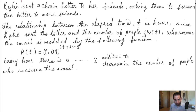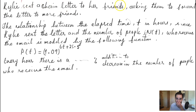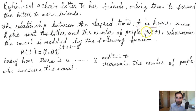Welcome back. In this example from Khan Academy, Kylie sent a chain letter to her friends asking them to forward the letter to more friends. The relationship between elapsed time t in hours since Kylie sent the letter and the number of people p(t) who receive the email is modeled by the function: p(t) = 1.09 raised to the power (6t + 25.5).